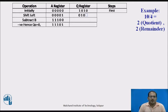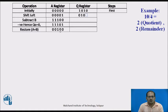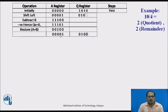After performing A minus B, the result in the accumulator is 11101. The sign bit (A0) is negative, indicating an unsuccessful subtraction. So Q0 is set to 0 and the restore operation A plus B is performed. Adding 11101 and B gives 00000 with Q content as 0100. This Q0 bit is 0 because the result was negative. This completes the first step.